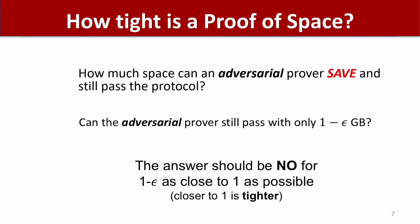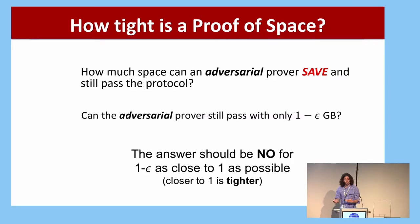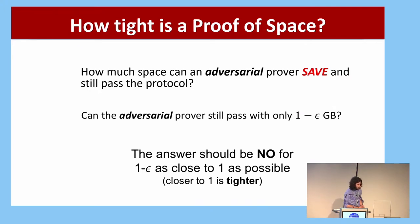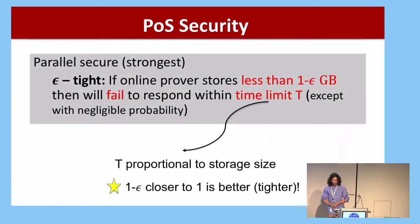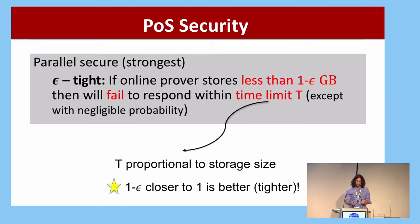How tight is a proof of space? That's the principal question this paper explores. In other words, how much space can an adversarial prover save and still pass the protocol? Could it pass with only (1 - ε) gigabytes if it claims to be using a gigabyte? For a tight proof of space, the answer should be no for (1 - ε) as close to 1 as possible — a smaller ε gives you a tighter proof of space. We define ε-tightness as: if the online prover stores less than (1 - ε) gigabytes, it should fail with overwhelming probability to respond within some time limit t.